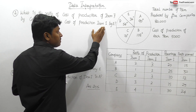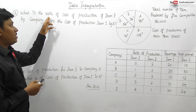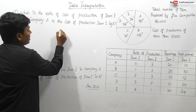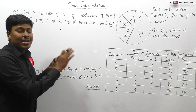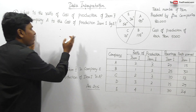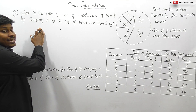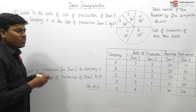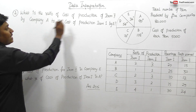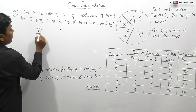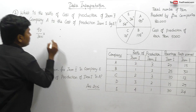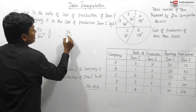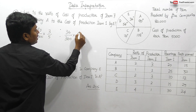Question number 4: what is the ratio of cost of production for item 2 by company A to item 1 by company E? Since we're finding a ratio, 80,000 and 5,000 cancel on both sides — no need to write them. Company A: 90/360, item 2 = 3 out of 5 parts. Company E: 36/360, item 1 = 4 out of 5 parts.